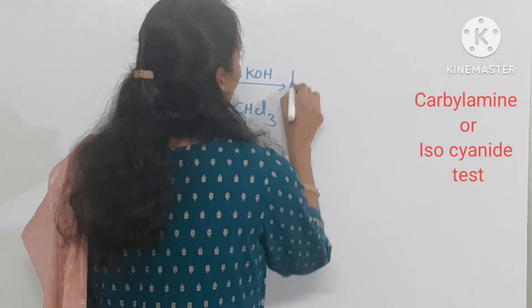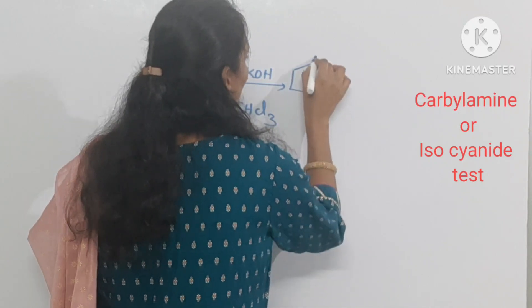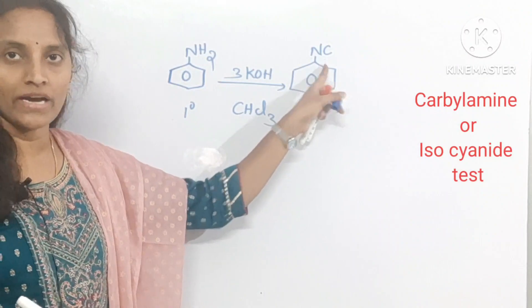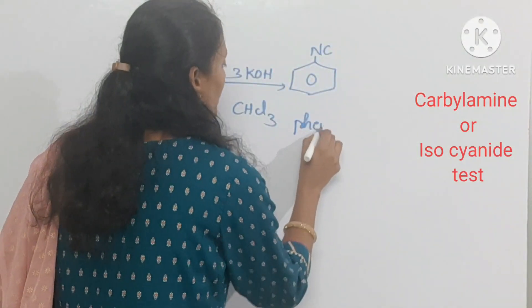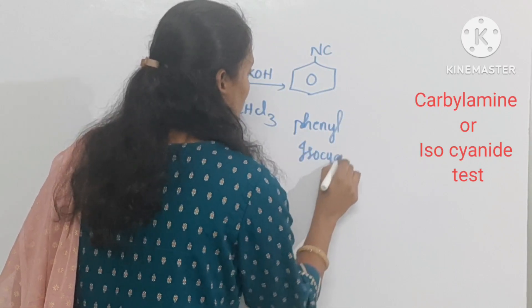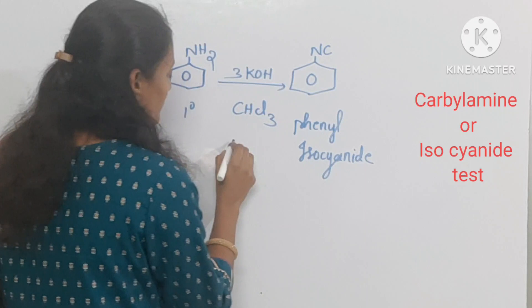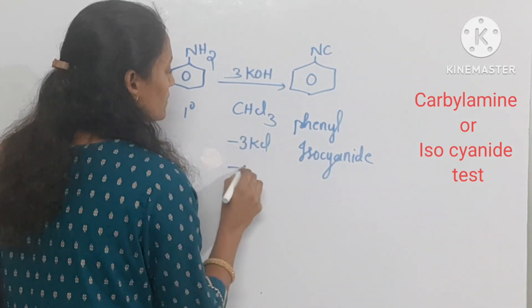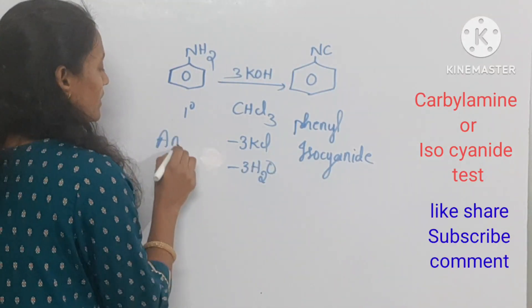The amine is converted into an isocyanide group — this is phenyl isocyanide. The byproducts are 3 moles of KCl and 3 moles of water. The reactant here is aniline.